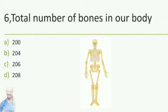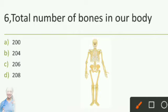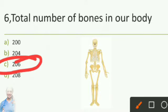Total number of bones in our body: option A 200, option B 204, option C 206, option D 208. The answer is option C, 206.